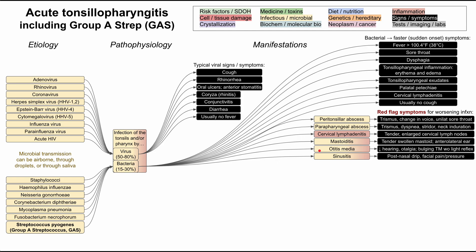Otitis media is when the bacterial infection spreads to the middle ear cavity. The patient may have decreased hearing or hearing loss, ear pain (otalgia), and on ear exam you'll notice a bulging tympanic membrane without a light reflex — or possibly a retracted tympanic membrane — but either way the tympanic membrane will be displaced with no light reflex. The nasal passages are also close to the throat and tonsils, so you can have bacterial sinusitis with exudate from the nasal passages, post-nasal drip, headache, facial pain, and pressure in the front of the face.